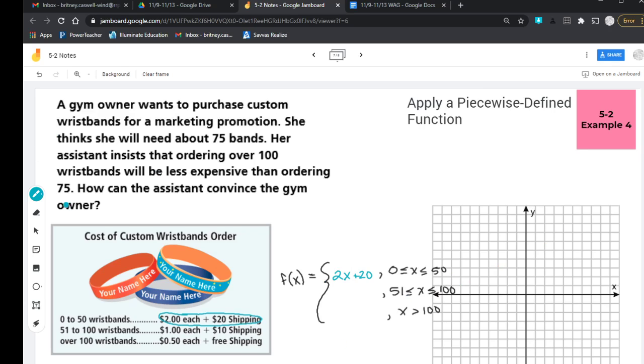And we'll graph that here in just a moment. So now our second equation, our rate is $1, so I would have 1x plus $10 in shipping. So that 10 would be my y-intercept.